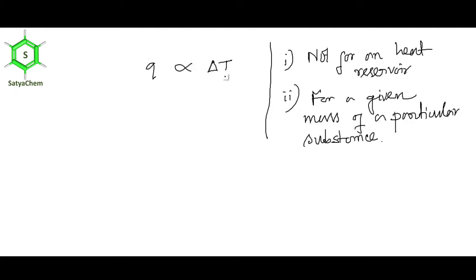If you calculate heat for five grams of iron and then for ten grams of iron, the calculated heat will be different. Similarly, calculated heat will be different for iron versus copper. That is why I have written: for a given mass of a particular substance.